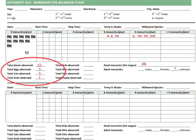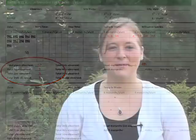At the end of the session, add up the total number of plants, eggs, and larvae that you observed, and tally this below the box. If you have only one species of milkweed at your site, you'll use one table per monitoring session. If you have more than one milkweed species at your site, keep track of them on separate tables — there are two tables per datasheet.